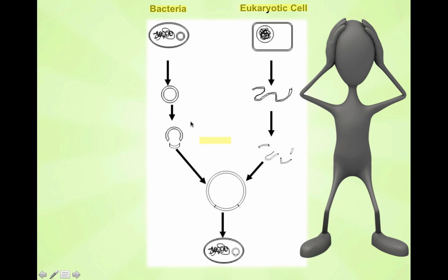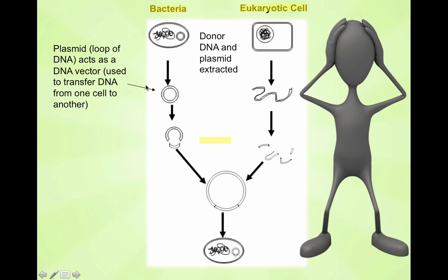So we're using biotechnology to help us out. The donor DNA is the origin of the gene we're interested in. The plasmid — our little vehicle — is extracted. A plasmid is just a loop of DNA used as a vector. The vector is a fancy way to say vehicle, to help transfer DNA from one cell to another. Viruses are also used as vectors; we can use viruses to inject DNA into other types of living organisms and bacteria.